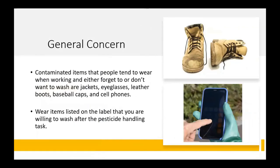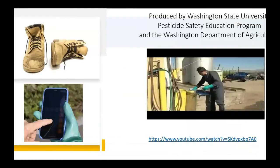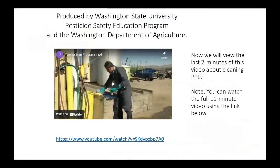Think about the items you wear or carry when handling pesticides — each has the potential to become contaminated. Contaminated items people often forget or don't want to wash include jackets, eyeglasses, leather boots, baseball caps, and cell phones. Wear items listed on the label that you're willing to wash after the pesticide handling task. A link to a video about the 12 steps for cleaning PPE has been provided for anyone who would like to view or share it with other pesticide handlers.